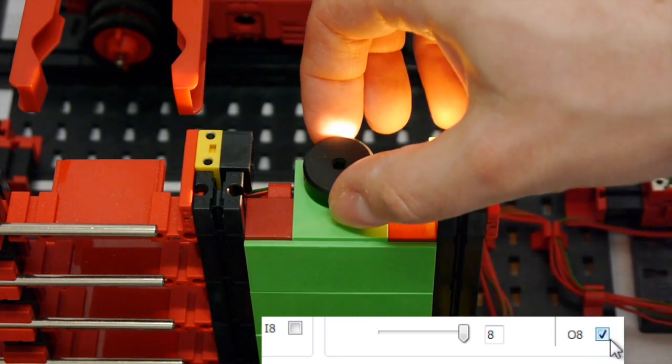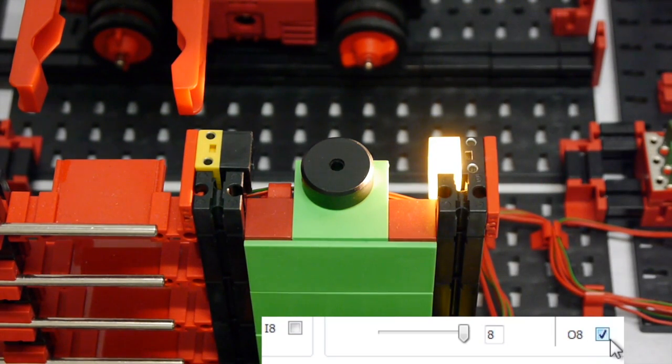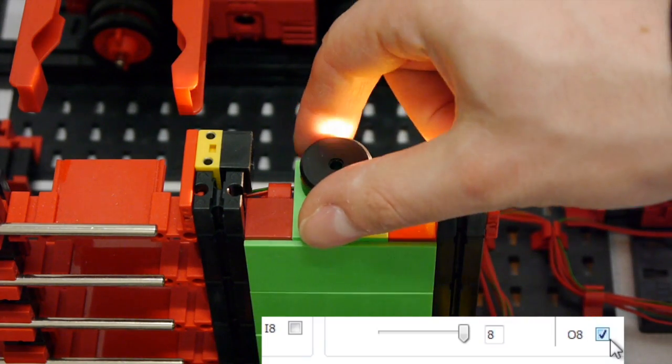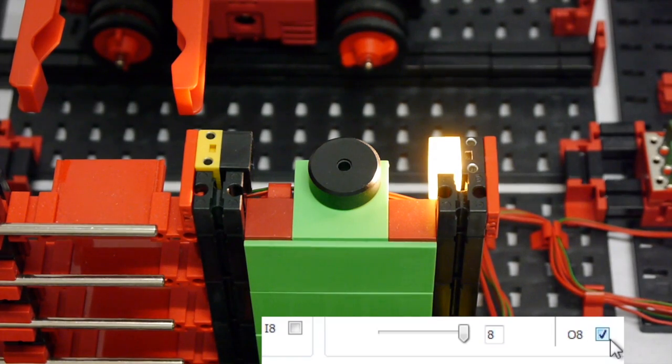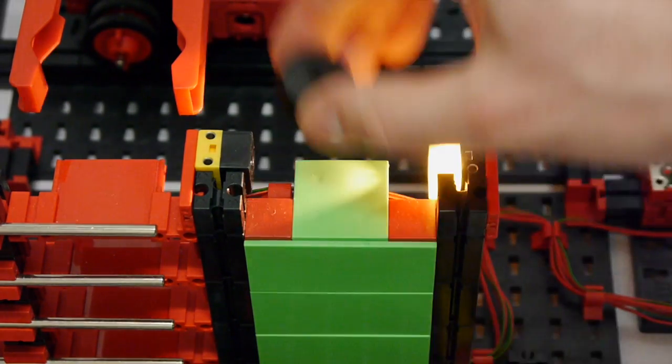Now let's put a piece onto the platform, thus blocking the path of the light. As you can see, the input I8 goes inactive again. This is obviously useful to check whether we can grab and store a new part. But what about the other photoelectric stuff beneath this? Let's take a look.